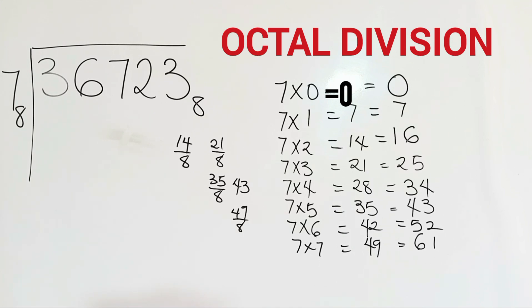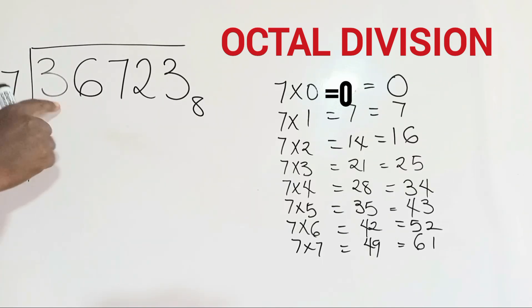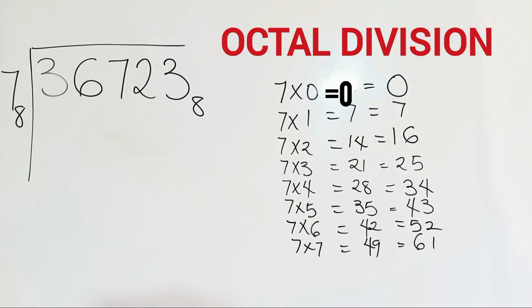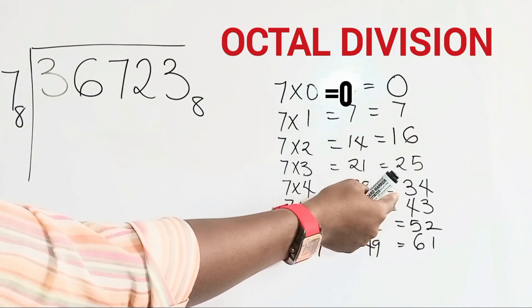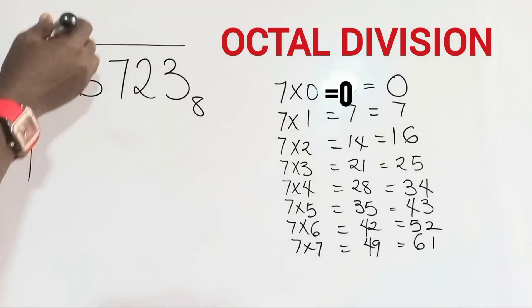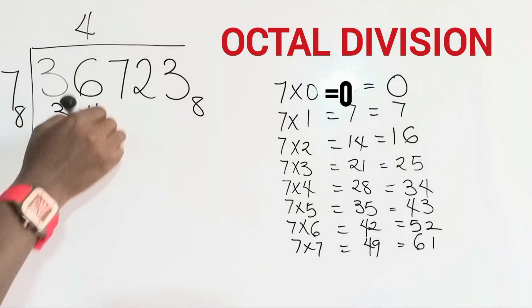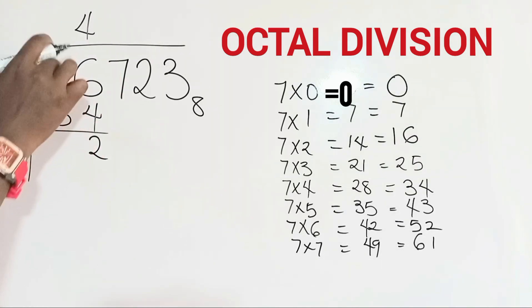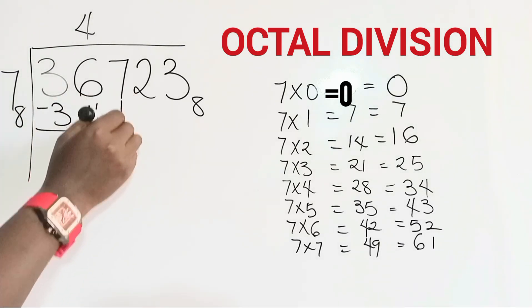And then we move over to dividing these numbers. We are going to be dividing 36723 in base 8 by 7 base 8 using this multiplication table. 3 cannot divide 7, so we use the first two digits, which is 36. 36 divided by 7, if we check our list here, we do not have 36, but we have a number that is close to it, which is 34, and that's 7 times 4. So 7 goes into 36 four times. 4 times 7 is 34 in base 8. We subtract, 6 minus 4 gives us 2, 3 minus 3 is 0. Then we bring down our next digit, which is 7.